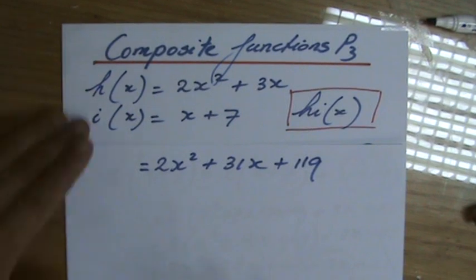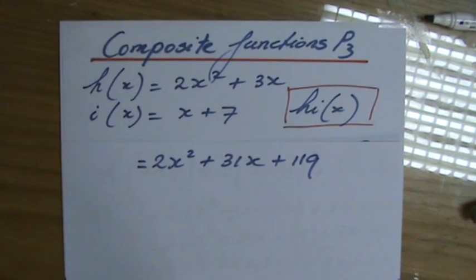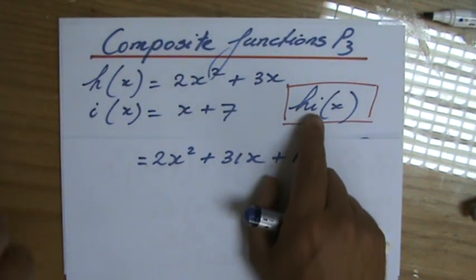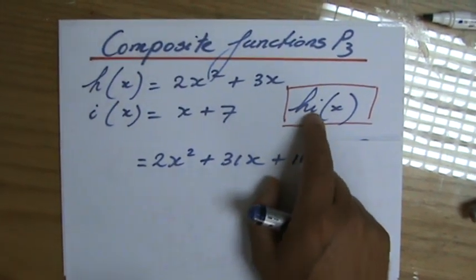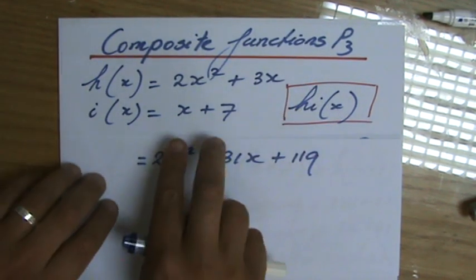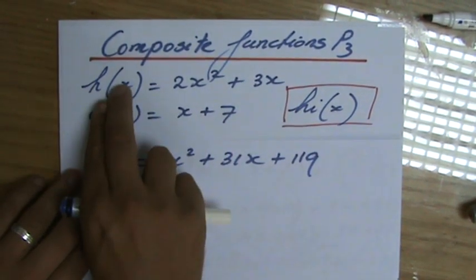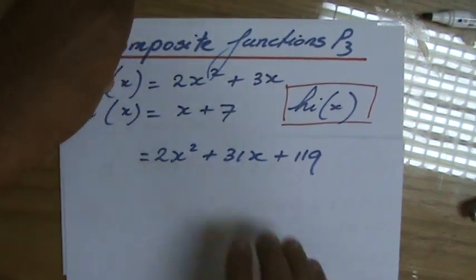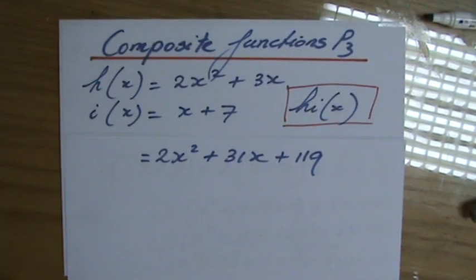So that is the answer. They gave me two functions, h and i, and this is the composite function, where I plug the function i into h for x. So I'm going to put x plus 7 for x in the function of h, and I'm going to get 2x squared plus 31x plus 119.